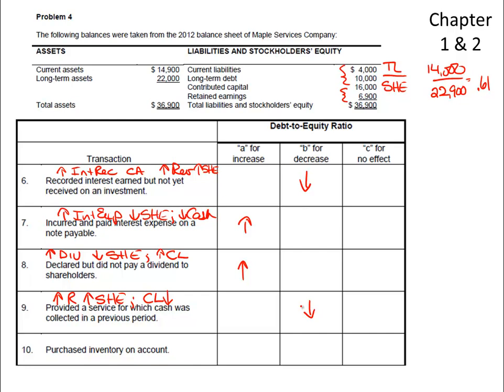We purchase inventory on account, which means a current asset is getting larger and a current liability is getting larger, so the numerator is getting larger and the debt-to-equity will increase. Note that if we purchased inventory for cash, there would be no effect. But because we're buying it on account, there is an impact because it affects the liabilities. Hopefully that helps.